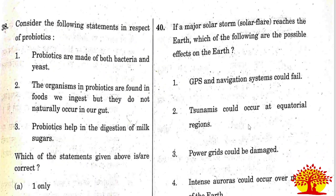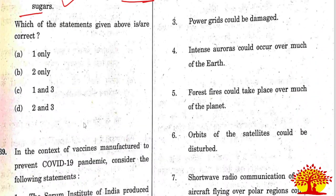Thirty-eighth question on probiotics: Statement 1 - probiotics are made of both bacteria and yeast - correct. Statement 2 - the organisms in probiotics are found in the foods we ingest - this is wrong. Probiotics are microorganisms naturally present in the digestive tract that aid digestion and reduce inflammation. Statement 3 - probiotics help in digestion of milk sugar - correct. Statements 1 and 3 are correct. Option C is the right answer.